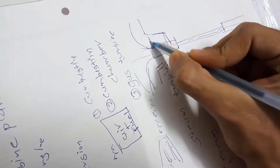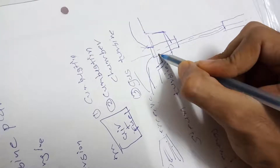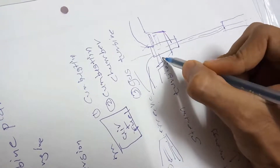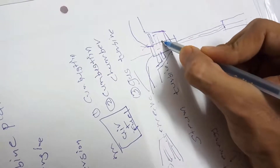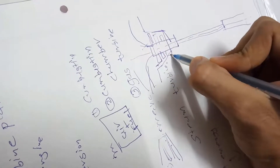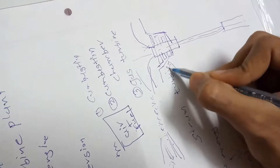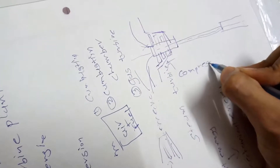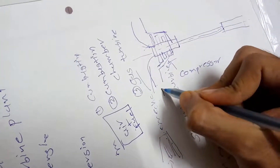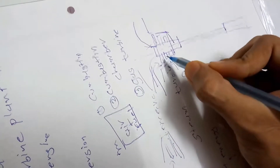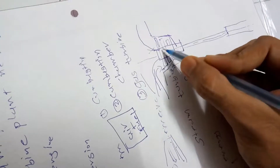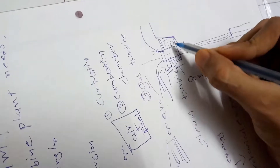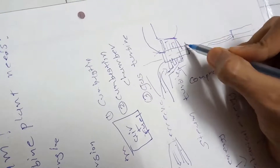I am going to draw some blades. What I have drawn here is called a compressor. First, air comes inside this compressor and this air gets compressed.